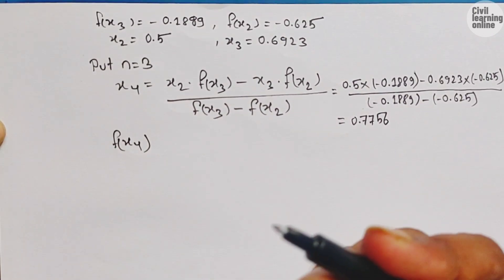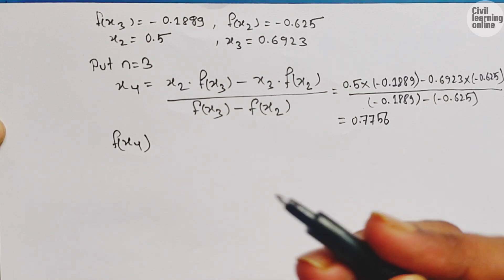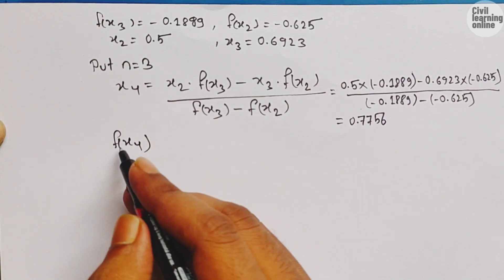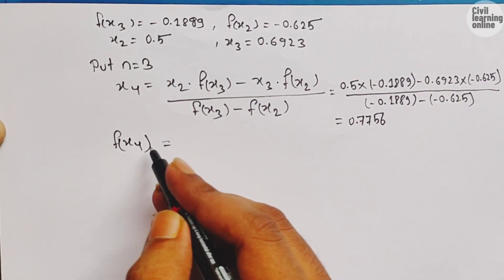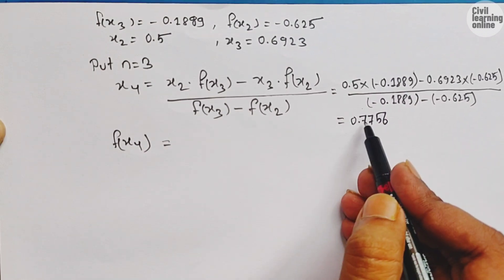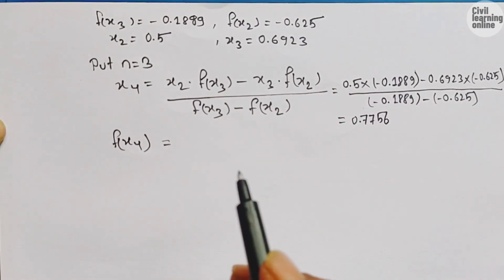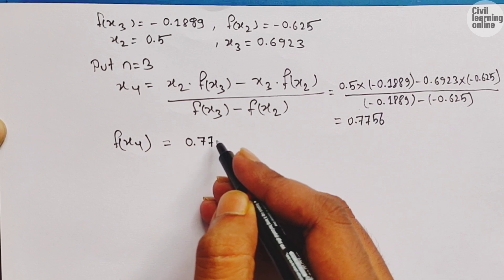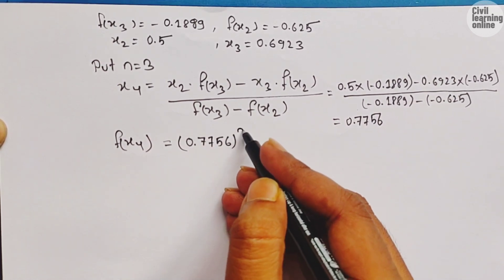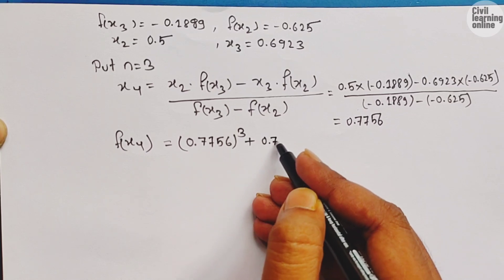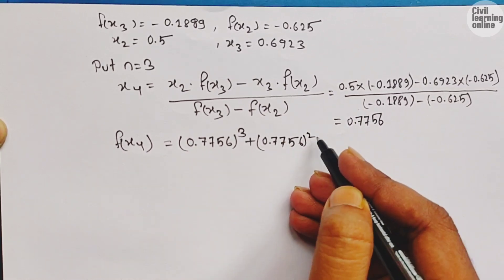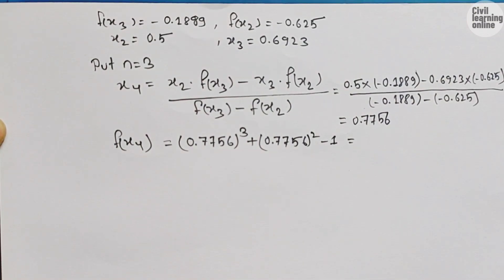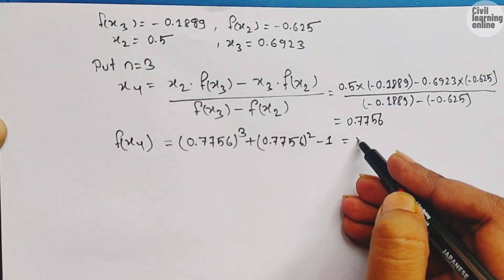After getting x₄ = 0.7756, we calculate f(x₄) because we need to go up to four iterations. Put x = 0.7756 in the equation x³ + x² - 1: 0.7756³ + 0.7756² - 1. Solving this gives f(x₄) = 0.0686.